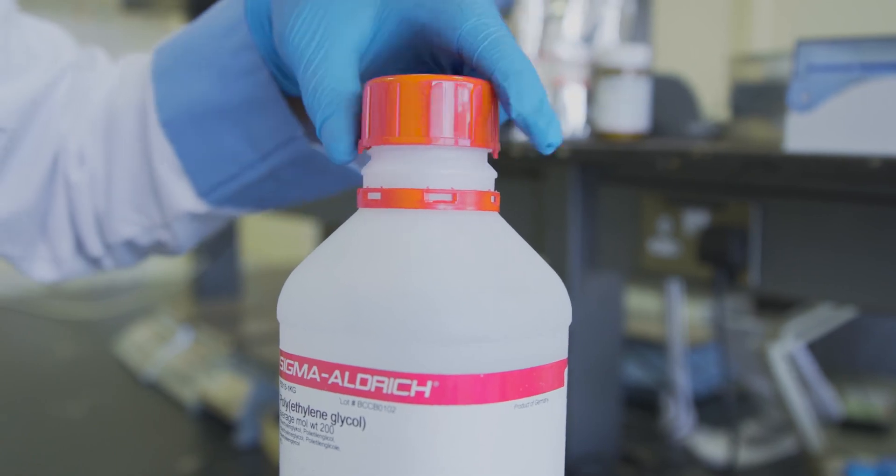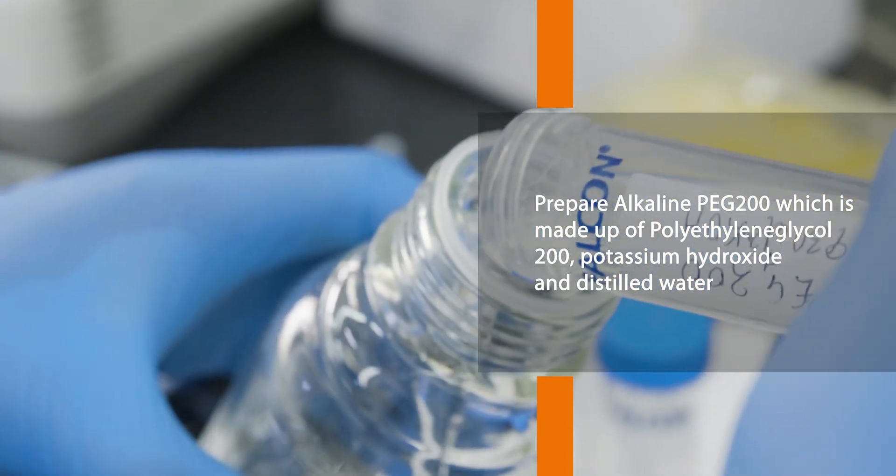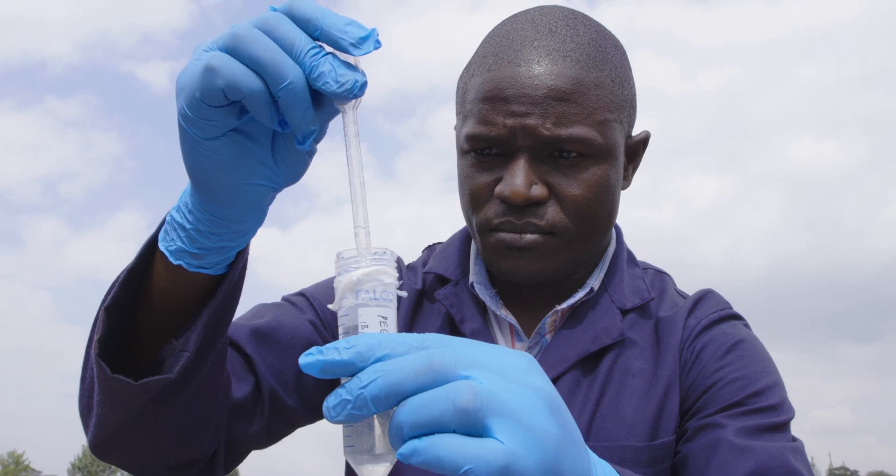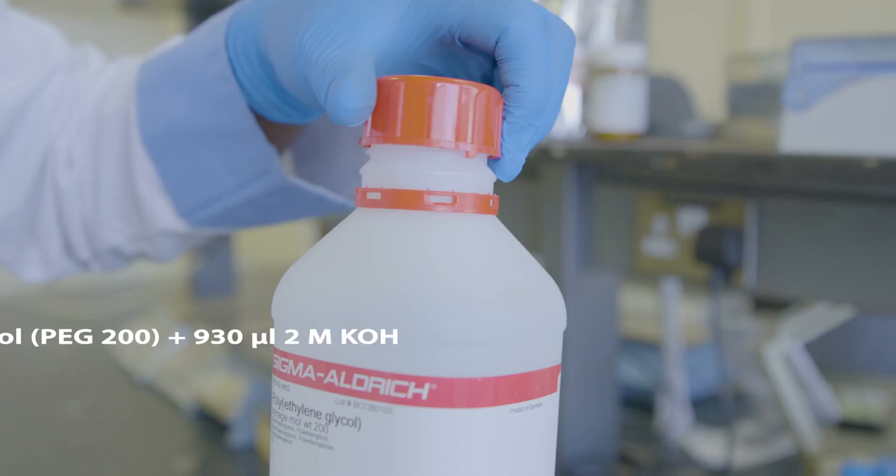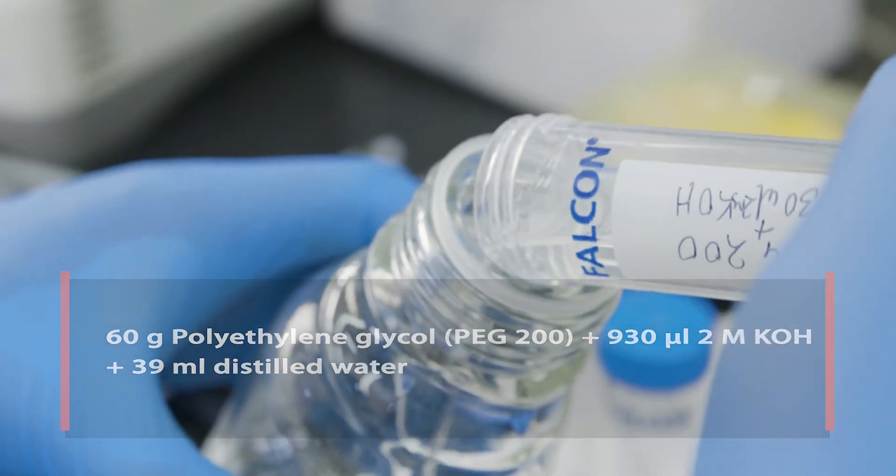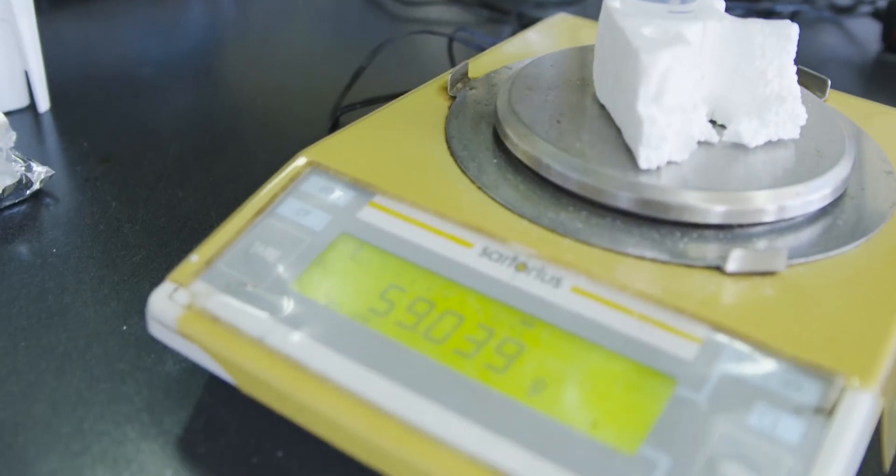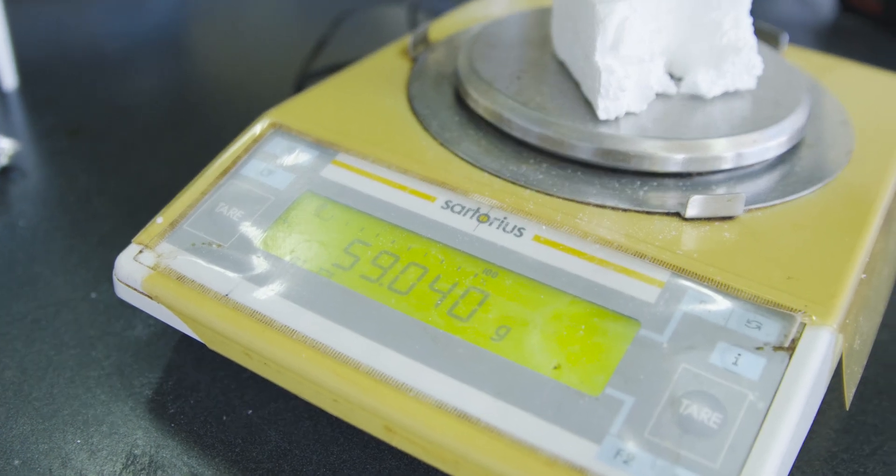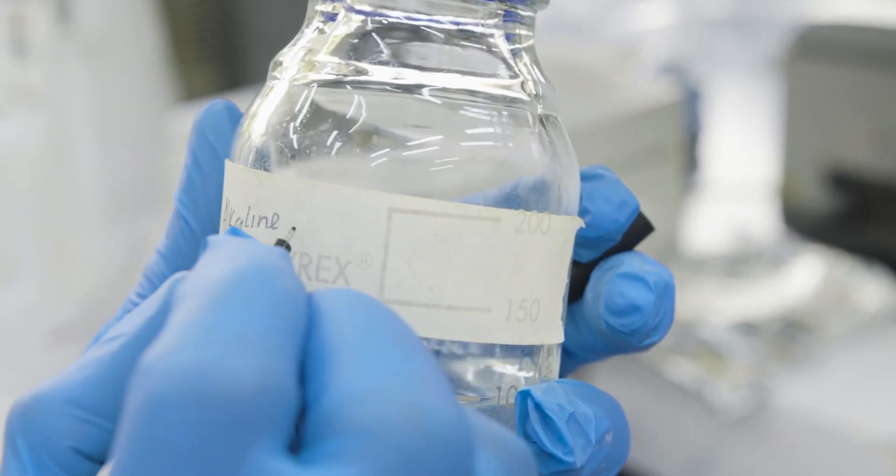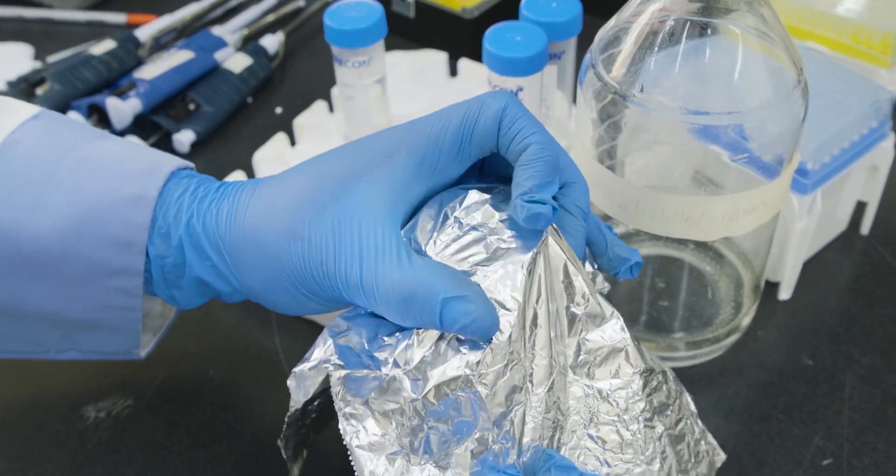If needed, prepare alkaline PEG200, which is made up of polyethylene glycol 200, potassium hydroxide, and distilled water. It is used as a lysing reagent for all samples tuber, stem, and soil. Use the following formula to prepare the alkaline PEG200. You can adjust the pH of the alkaline PEG200 by adding drops of 930 microliters of potassium hydroxide or sodium hydroxide until the pH reaches around 13.3. The alkaline PEG buffer should be stored at room temperature either in a dark bottle or a bottle wrapped in foil to protect it from light.